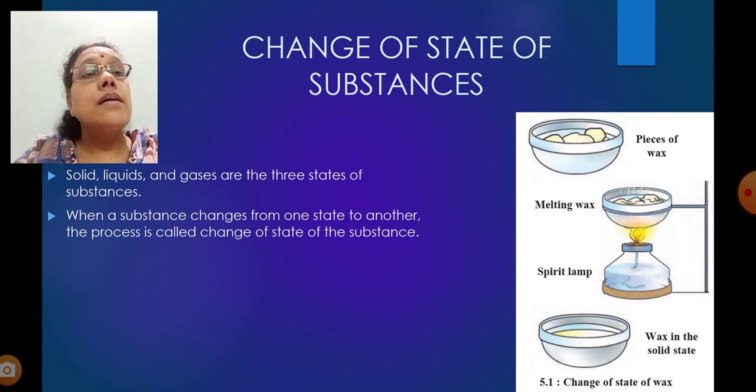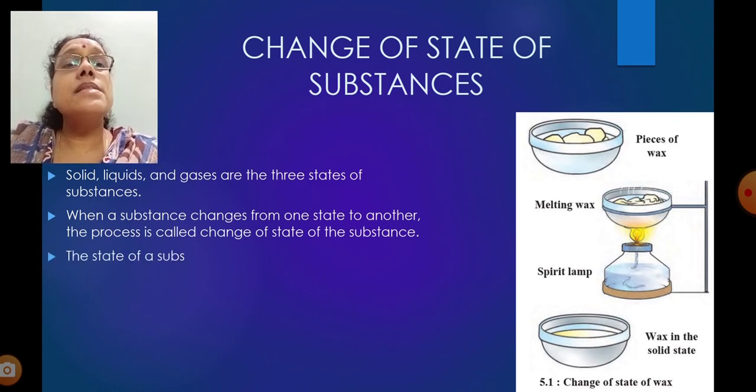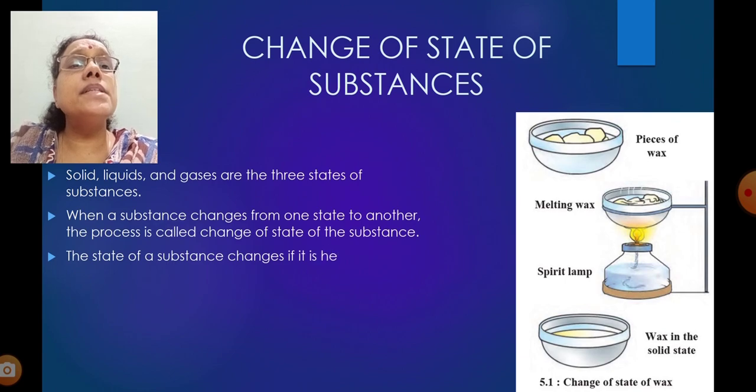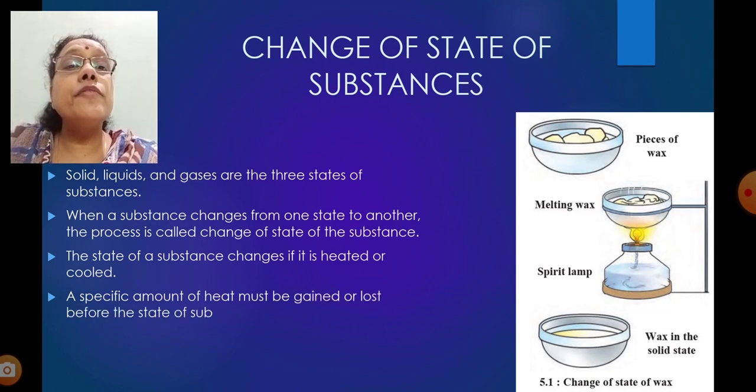Here in the experiment also, they have shown that change of state of wax. Wax in the solid state, then as it melts, it turns. When a substance changes from one state to another state, the process is called change of state of the substance. The state of a substance changes if it is heated or cooled. A specific amount of heat must be gained or lost before the state of substance can change.